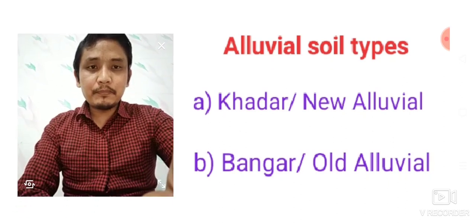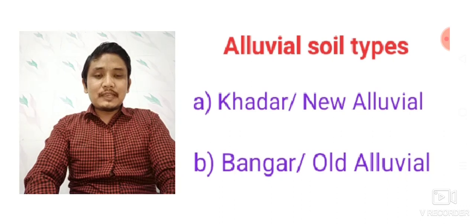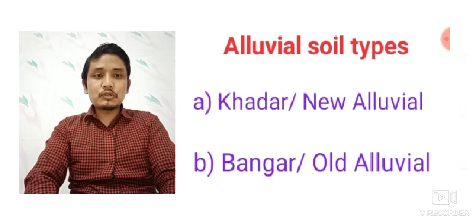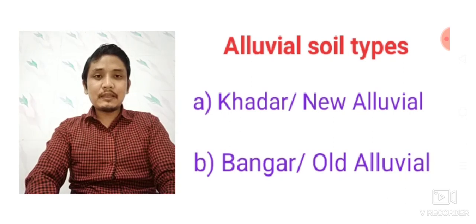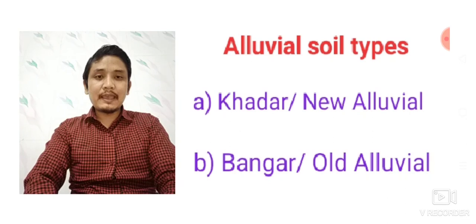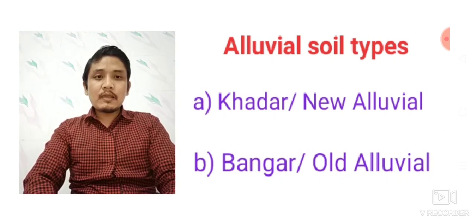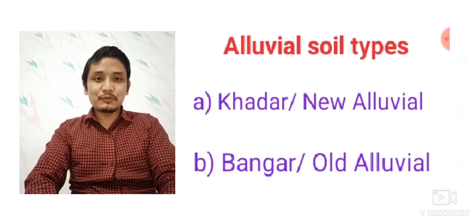An important point about alluvial soil: alluvial soil can be divided into two types. First is Khadir, also called new alluvial soil, which is the most fertile alluvial soil. It is found mostly in flood-prone areas where rivers carry alluvial soil with floodwaters every year. The second type is Bangar, also called old alluvial soil, which is less fertile. Mostly in India we find old alluvial soil.